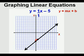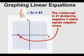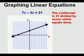Let's review. If you have an equation in standard form, you can graph it with two points. Cover the y-term, then solve for x to get the x-intercept — here it's 21 divided by negative 3, which equals negative 7. Mark the x-intercept on the x-axis. Next, cover the x-term and solve for y to get the y-intercept — here it's 21 divided by 7, which equals 3. Mark the y-axis at y equals 3, then draw the line through the two points.